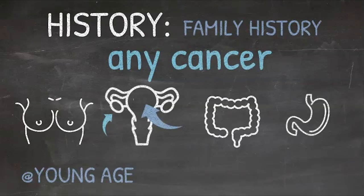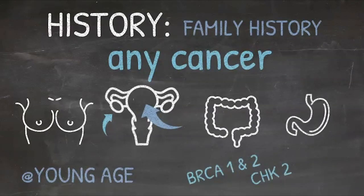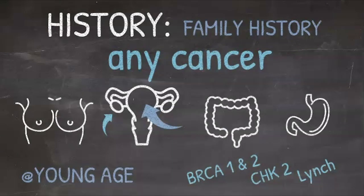We want to do a really good delve into family history, looking for any history of cancer. Breast and ovarian are very important, but we also want to know about the history of colon cancer, uterine cancer, stomach cancers, and particularly cancers that occur at a young age. We want to be alert to breast cancer associated deleterious mutations such as BRCA1 and 2 or the CHEK2 mutation, and even Lynch syndrome, which we all associate with colon cancer, can be associated with a higher risk of breast cancer.